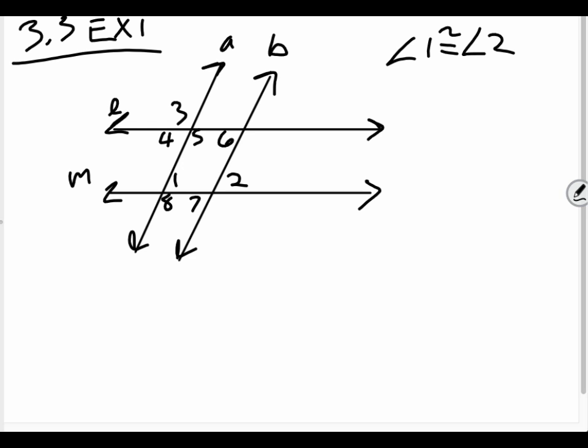But it says if 1 and 2 are congruent, in other words, angle 1 is equal to angle 2. What lines are parallel? So first we have to identify what angle 1 and angle 2 are to which lines. Well, right off the bat, those are corresponding angles for A and B, right?